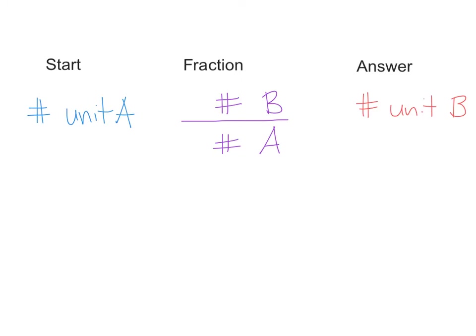From here, it's pretty straightforward. We're going to multiply our starting number by that fraction. When we multiply by a fraction, we multiply by the numerator — the top number — and the symbol in the fraction represents division, so we divide by the bottom number. When we perform that calculation, it will give us our conversion.